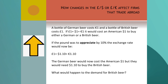Here's an example of how exchange rate changes affect firms that trade abroad. A bottle of German beer costs one euro and a bottle of British beer costs one pound. If £1 equals $1 equals €1, it costs an American one dollar to buy either. If the pound appreciates by 10%, the exchange rate becomes £1 to $1.10. The German beer still costs the American $1, but they now need $1.10 to buy British beer. Have a think about what would happen to demand for the British beer and discuss with a partner.